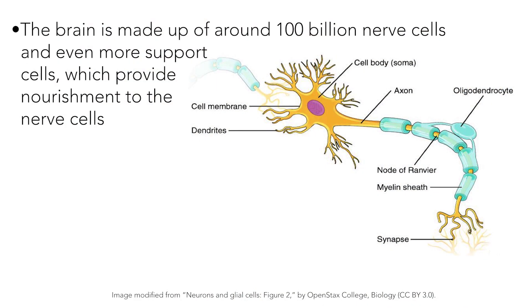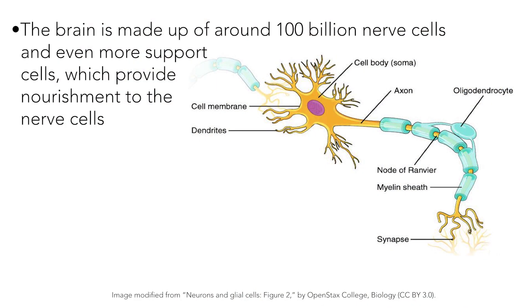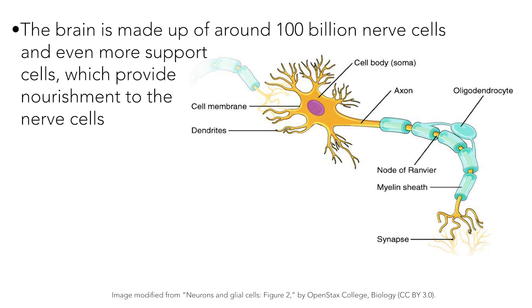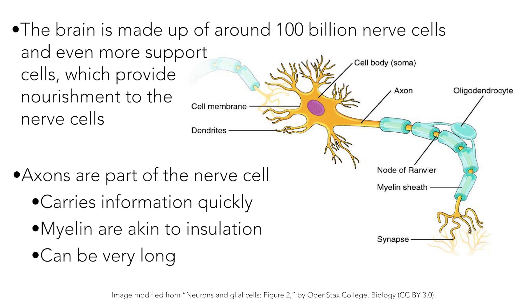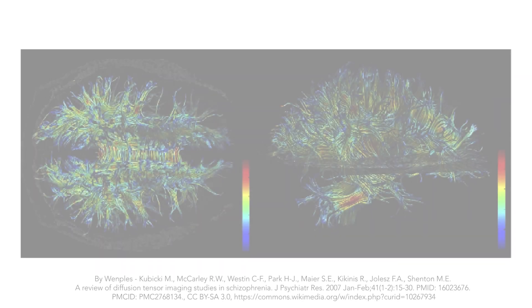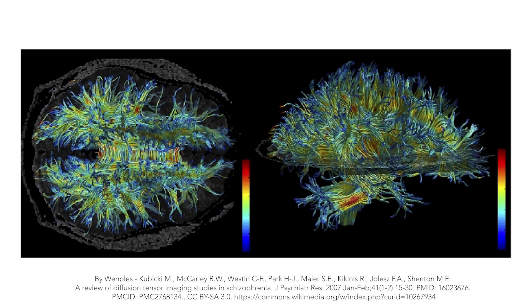Before I get into an overview of the functions of the parts of the brain, I will briefly mention that there are around 100 billion nerve cells that make up the brain and even more support cells which provide nourishment to these nerve cells. A specific part of these nerve cells include axons, which carry information quickly from one nerve cell to another. Axons are typically covered in a lipid-rich sheath called myelin. This myelin can be thought of like insulation on electrical wiring that helps increase the speed of information transmission. Bundles of these axons with myelin sheaths are similar to information highways transmitting data from one part of the brain to another.